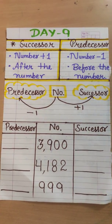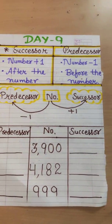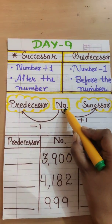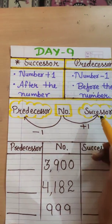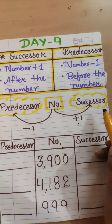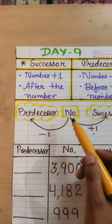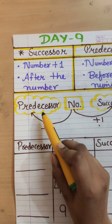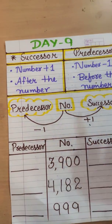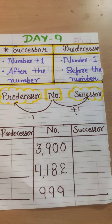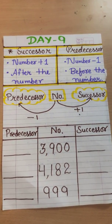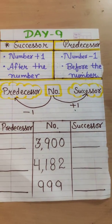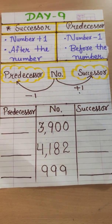As we can see in our example here, the number is there, and if we go one step forward — plus one — we get its successor. And if we go one step backward, we get our predecessor. So successor is found by adding one, and predecessor is found by subtracting one.